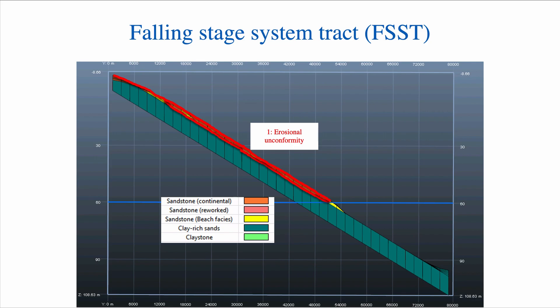I would have two erosional unconformities: one at the very base of the FSST, because the regression itself implies erosion by wave action at the base, and one at the top of the FSST.